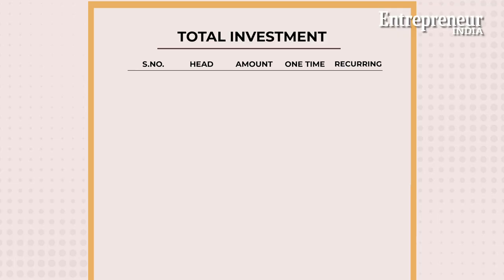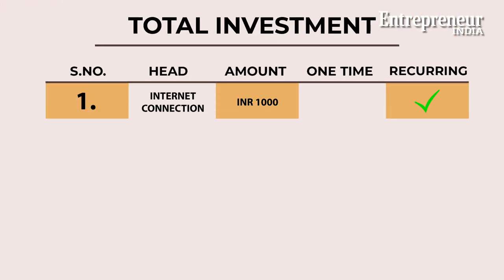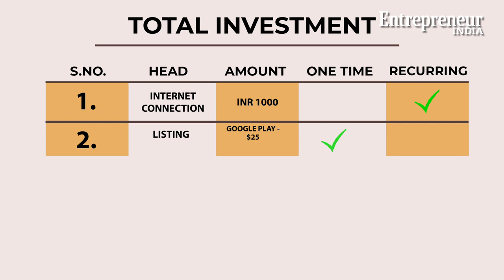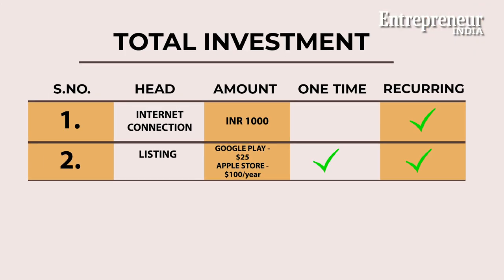Making an app is time-consuming. But if you are already a developer with knowledge of the necessary programming languages, it doesn't cost you much to make a basic one. You need a good internet connection, which will cost you up to 1000 rupees. To get your app listed on the Google Play Store, you just need to pay a one-time fee of $25, while for Apple you will be charged $100 a year.